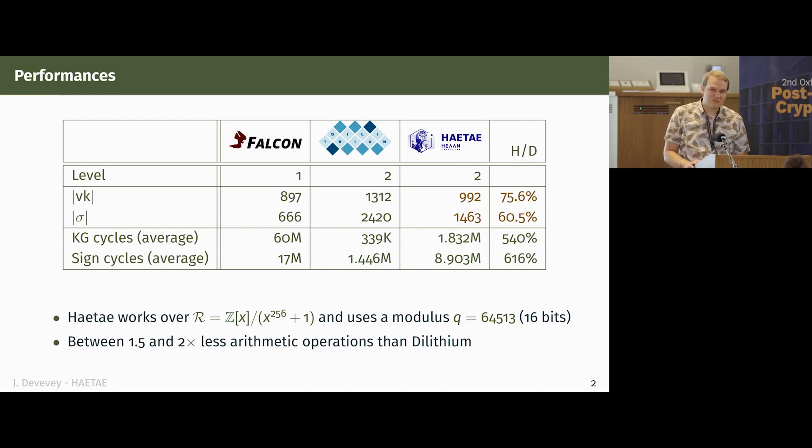So to see if we were successful at our bet of making sizes smaller, here's directly the comparison with performances. We are indeed smaller than Dilithium. You have the ratio of the sizes on the last column, but it's still not enough to reach Falcon level of compactness. And you can see that the main drawback of the scheme is that it is now much slower than Dilithium, between five and six times.